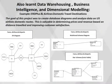Another tool I learned is ERD+, which I used in data warehousing, business intelligence, and dimensional modeling. A case in example is airline domestic travel destination — a dataset I sourced from government.org. The goal was to create database diagrams and analyze data on US airline domestic routes, which is valuable in determining prices or fares, predicting revenue on distance traveled, and improving customer satisfaction. These are my high-level diagrams: my ERD diagram, where fare is a trigger to all these other processes; my relational schema diagram; and the star schema, or what we call the fact table.